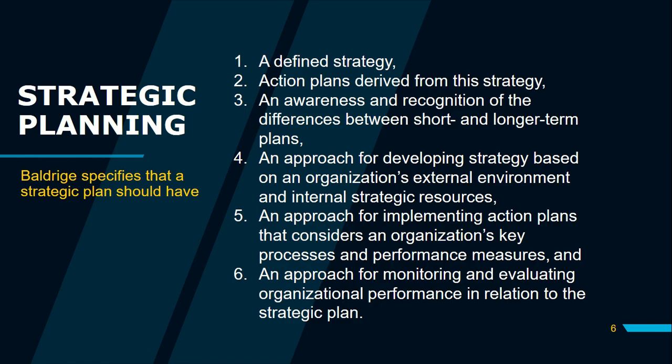Baldrige specifies that a strategic plan should have: a defined strategy; action plans derived from this strategy; an awareness of the differences between short and longer-term plans; an approach for developing strategy based on an organization's external environment and internal strategic resources; an approach for implementing action plans that considers key processes and performance measures; and an approach for monitoring and evaluating organizational performance in relation to the strategic plan. While Baldrige does not specify a best way for strategic planning, it emphasizes the parts that strategic management should have.